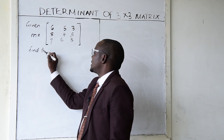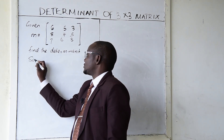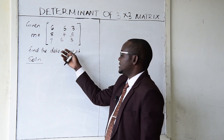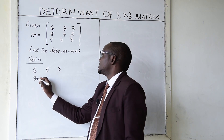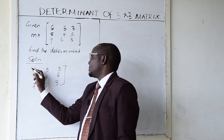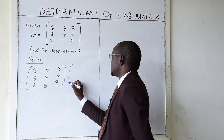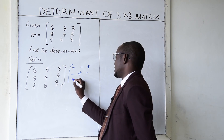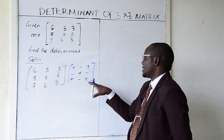To find the determinant, we start with the original matrix: 6, 5, 3 / 8, 4, 5 / 7, 6, 3. We use the identity sign matrix, which has the pattern: plus, minus, plus / minus, plus, minus / plus, minus, plus.